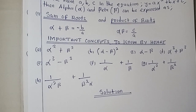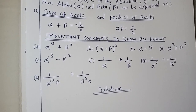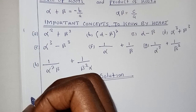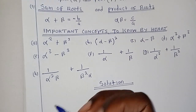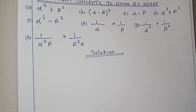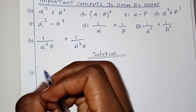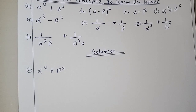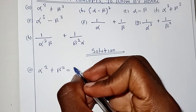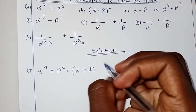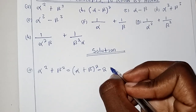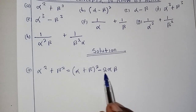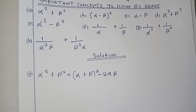Now we come to the important concepts that you should know to understand this topic well. The first identity: alpha squared plus beta squared can be written as alpha plus beta, all squared, minus two alpha beta. You must be able to know that by heart.